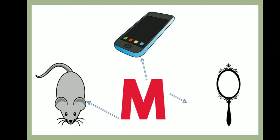Now let's see the words that begin with letter M. M for mobile. M for mirror. M for mouse. Now children, repeat after me. M for mobile. M for mirror. M for mouse.